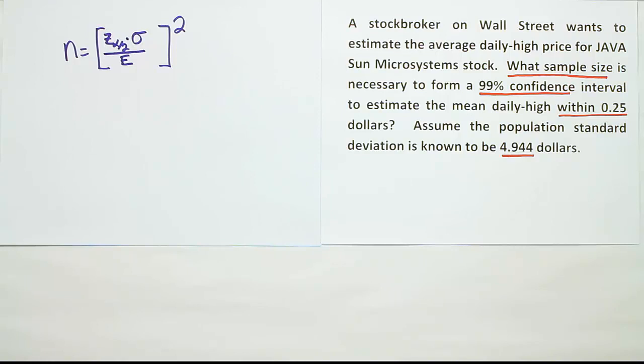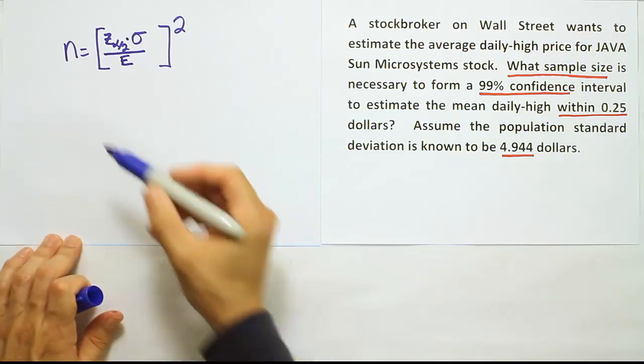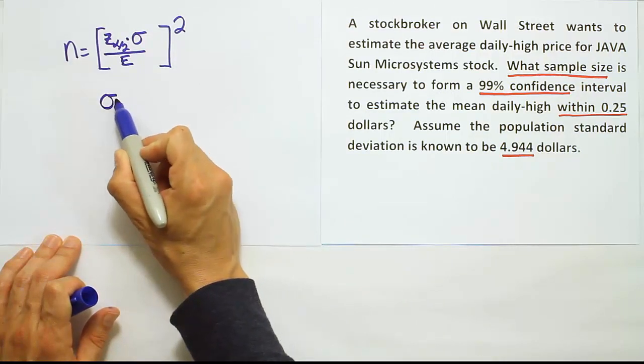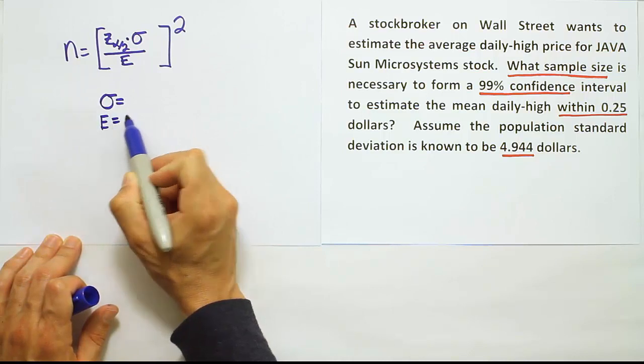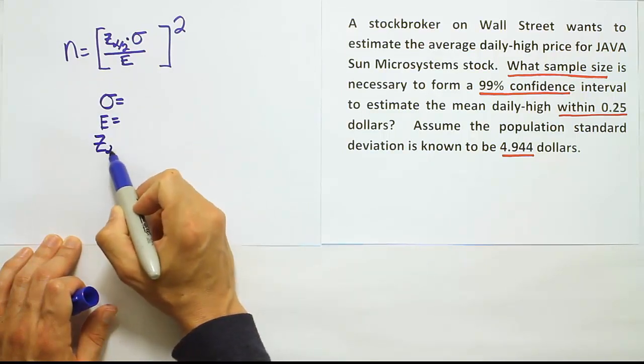The next thing I want to do is list the variables that are involved in the formula that we have to get from the problem itself. Starting with the easiest to get, we're going to put standard deviation sigma, then we're going to use E for error, and then finally z alpha divided by 2.